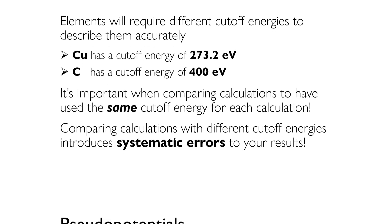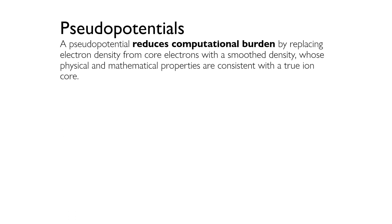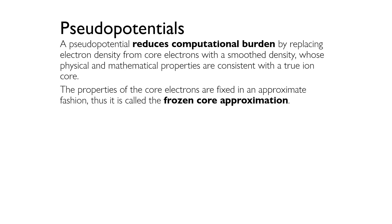Finally, you'll touch on a major method that must be employed to reduce the computational cost of DFT calculations. From a physical point of view, core electrons aren't that important when it comes to defining many of the interesting characteristics of materials, such as chemical bonds, ionization energies, and so on. A pseudopotential, in essence, replaces the costly calculations for the contributions of the core electrons to the electron density with a smooth density that matches the various important physical and mathematical properties of the true ion core. The properties of the core electrons remain fixed in this approximate fashion during a DFT calculation. This is called the frozen core approximation.